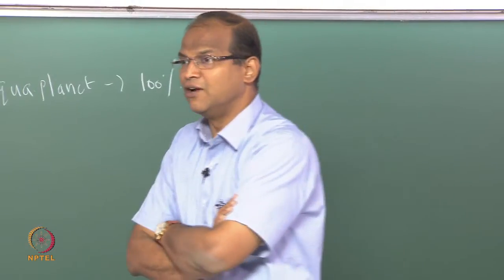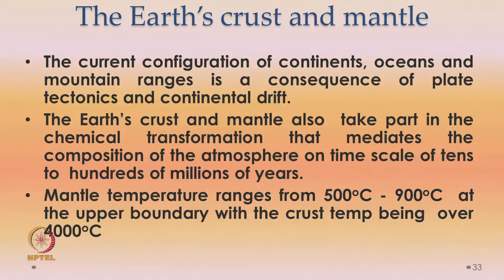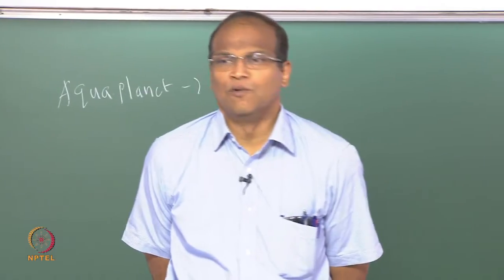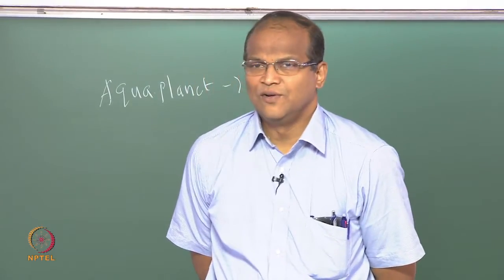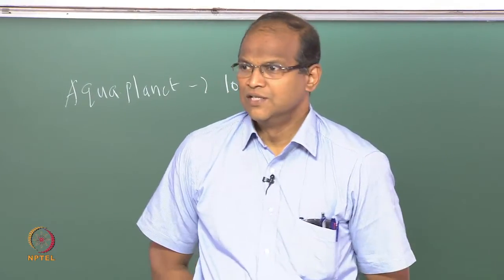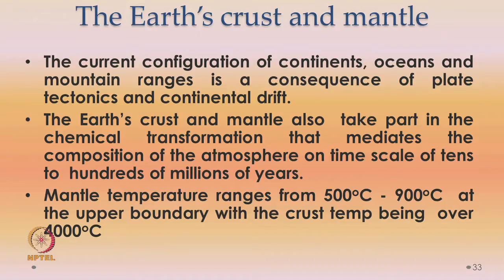The mantle temperature ranges from 500 to 900 degrees centigrade inside the earth's surface. At the upper boundary with the crust, the crust temperature can be over 4000 degrees centigrade. If you are interested in this, you would study mantle convection, which comes under geophysics or geology. Mantle convection uses the same fluid mechanics and heat transfer equations, but the scales will be very different and temperatures will be very different. Your Boussinesq approximation and similar assumptions — we do not know whether they will be valid or not.